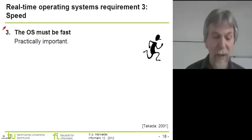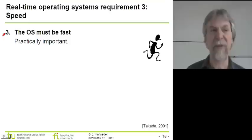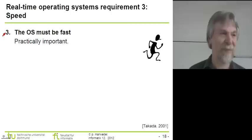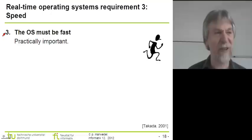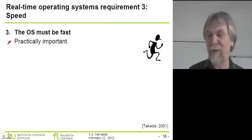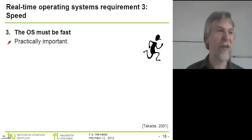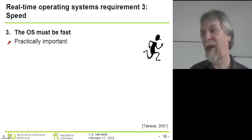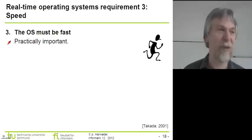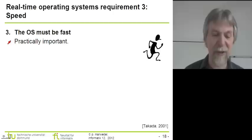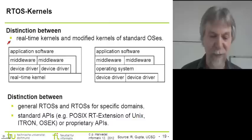The third requirement for real-time operating systems is speed — the RTOS must be fast. It is very difficult to formally define what 'fast' means. For example, guaranteeing that all time services finish within one hour would be very predictable but totally useless — the system would be too slow. In practice, you must guarantee a certain speed, though it remains difficult to define what is sufficiently fast.